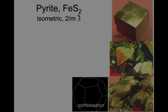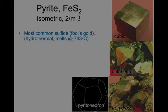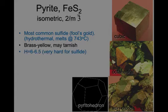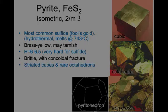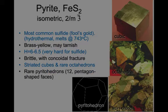Here is pyrite, FeS₂. It forms isometric crystals and is the most common sulfide, also called fool's gold because it has the same sort of gold-yellow color. It melts at 743°C, so it's largely formed in hydrothermal veins. It's brass yellow and may tarnish to black. Its hardness is 6 to 6.5, which is very hard for a sulfide. It has a brittle conchoidal fracture. It typically forms striated cubes, as in the upper right, and octahedra, as in the middle right, and more rarely pyritohedrons — the pentagonal-shaped ones below.